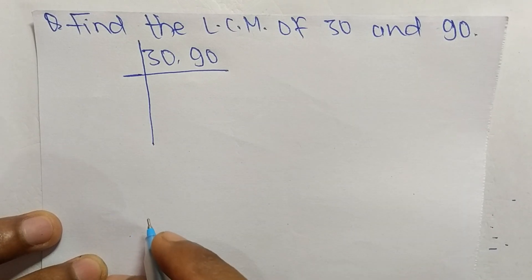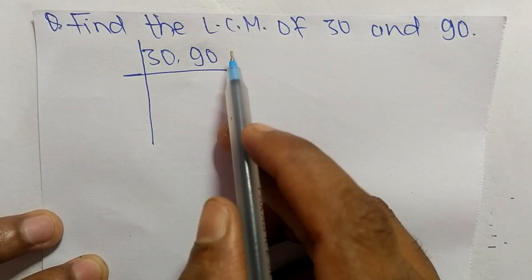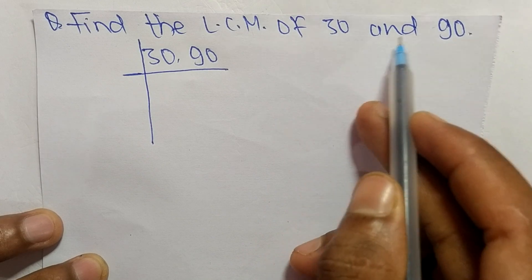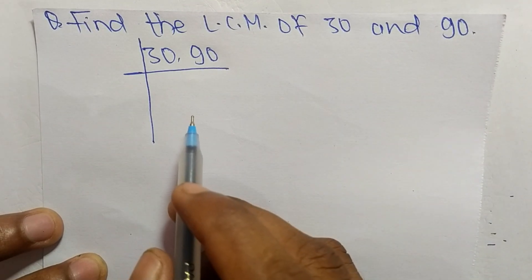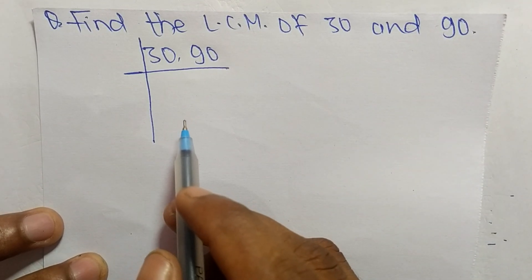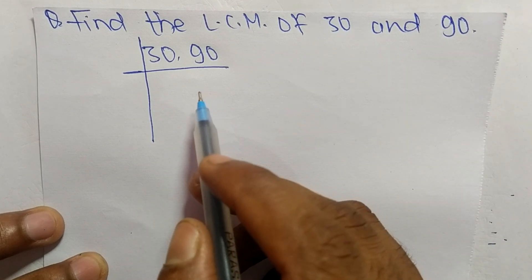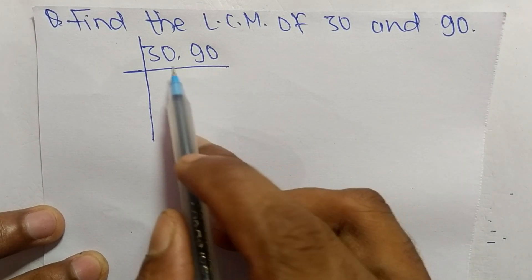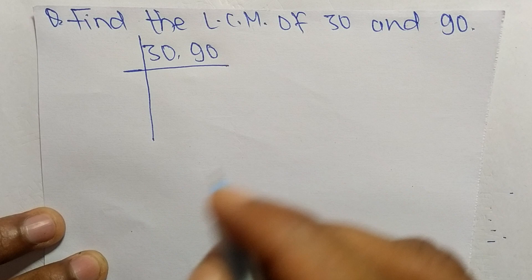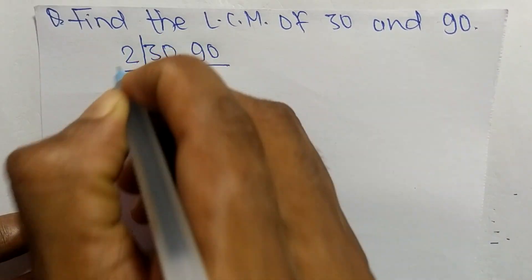Today in this video, we shall learn to find the LCM of 30 and 90. To find LCM, first we choose the lowest number that can exactly divide 30 and 90.